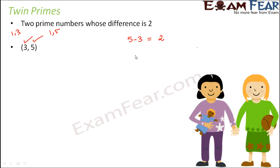So 3 and 5 are called twin primes. So any such two numbers which are both primes and the difference between the two is 2, they are called twin primes. 5 and 7 is another example. The difference is 2. Both are primes.